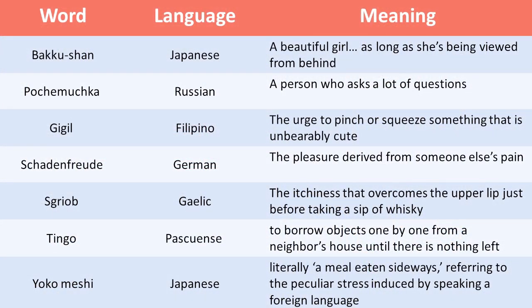For example, there's a Japanese word, 'bakushan,' which refers to a beautiful girl as long as she's being viewed from behind. There's a Russian term, 'poshemushka,' that refers to a person who asks a lot of questions — maybe you shouldn't be asking a lot of questions if you live in Russia. There's a Filipino term, 'gigil,' which refers to the urge to pinch or squeeze something that is unbearably cute. You might be familiar with the German 'schadenfreude' — the pleasure derived from somebody else's pain. And there's a Gaelic term, 'sgiob,' that refers to the itchiness of the upper lip just before you take a sip of whiskey.